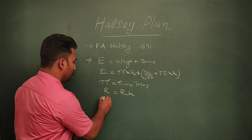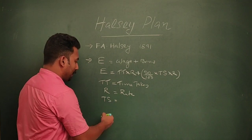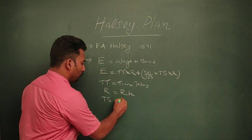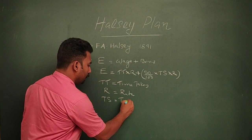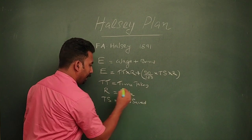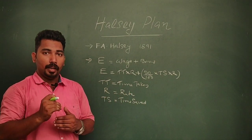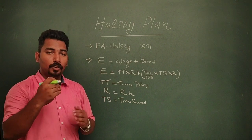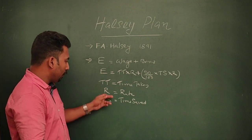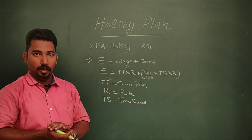TS stands for time saved, which is the difference between the standard time provided and the actual time taken by the employee. Multiply time saved by the rate and take 50% to get the bonus, which you add to base wages to get total earnings.